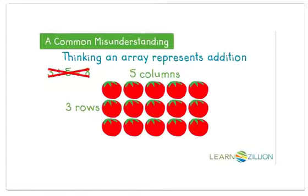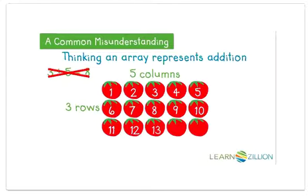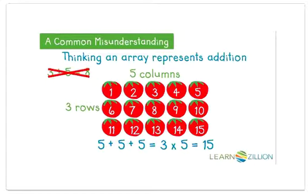There are a lot more than eight tomatoes in this array. In an array, we can add equal groups or multiply rows times columns. So to show the fifteen tomatoes in the array, we could add the groups of five: five plus five plus five. Or multiply three times five to show that there are fifteen tomatoes in this array.